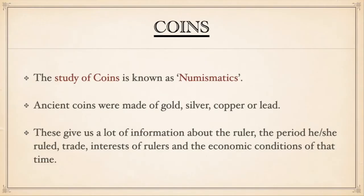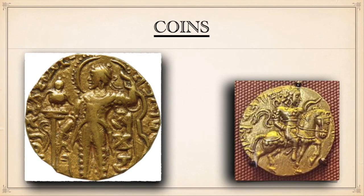The study of coins is known as numismatics. Ancient coins were made of gold, silver, copper or lead. Thousands of ancient Indian coins have been discovered from which ideas about the contemporary economic condition, currency system, and development of metallurgical art have been obtained. Coins give us a lot of information about the ruler, the period they ruled, trade interests of the rulers, and economic conditions of that time.